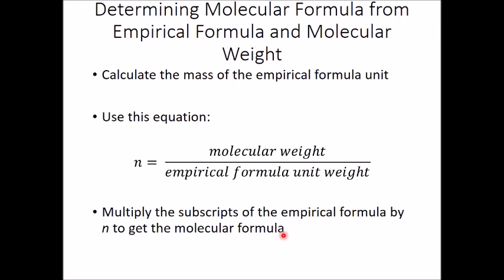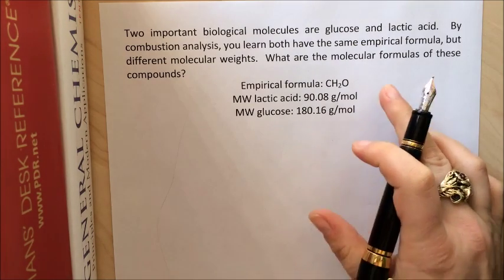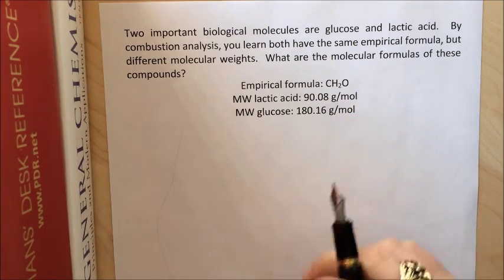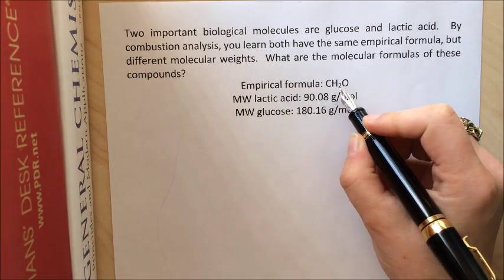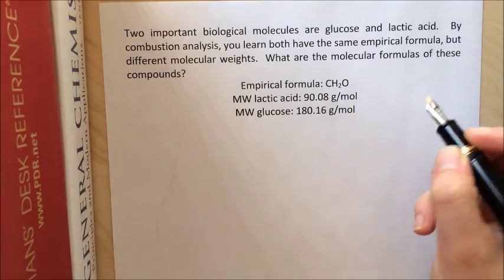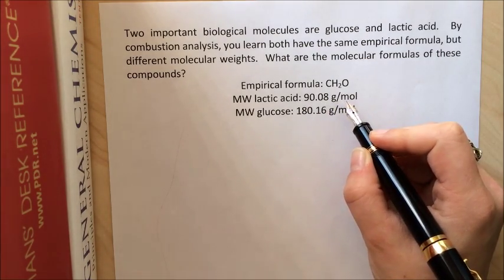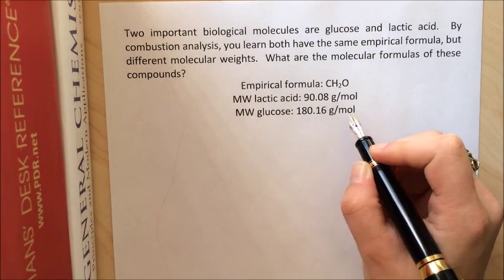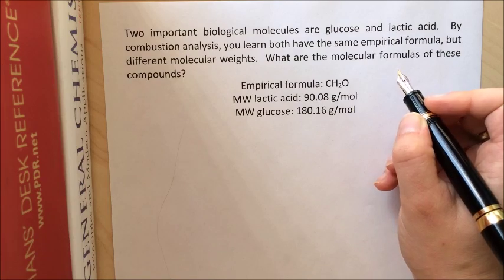Let's take a look at this in action. Two important biological molecules are glucose and lactic acid. By combustion analysis you learn that both have the same empirical formula CH2O but they have different molecular weights. Lactic acid is 90.08 grams per mole whereas glucose is 180.16 grams per mole. What are the molecular formulas of these compounds?